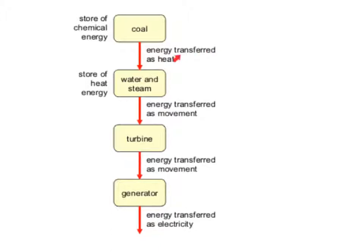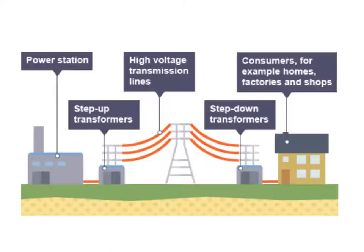It's burnt and transferred into thermal energy or heat, which boils water into steam, causing the turbine to turn — so it's turned into kinetic energy. It then turns the generator, which produces electrical energy. So you've got your energy transfers there.